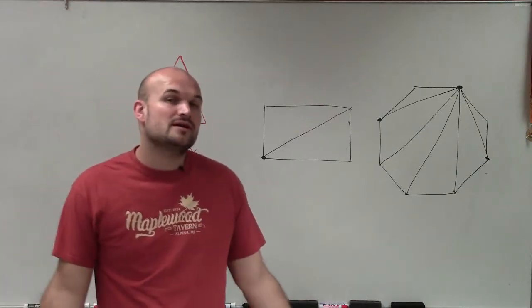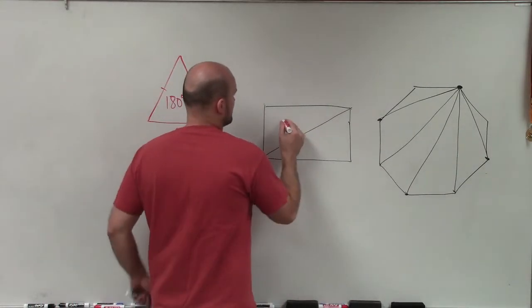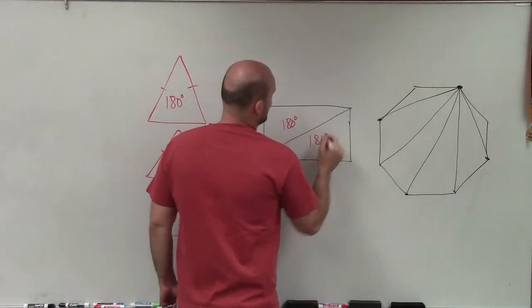Now, all I'm simply going to do is count the number of triangles that I have. And you can see here, I have two triangles. 180 degrees, 180 degrees.